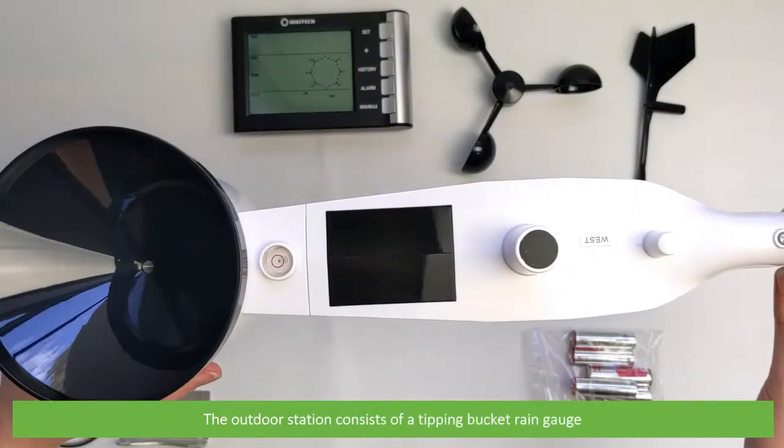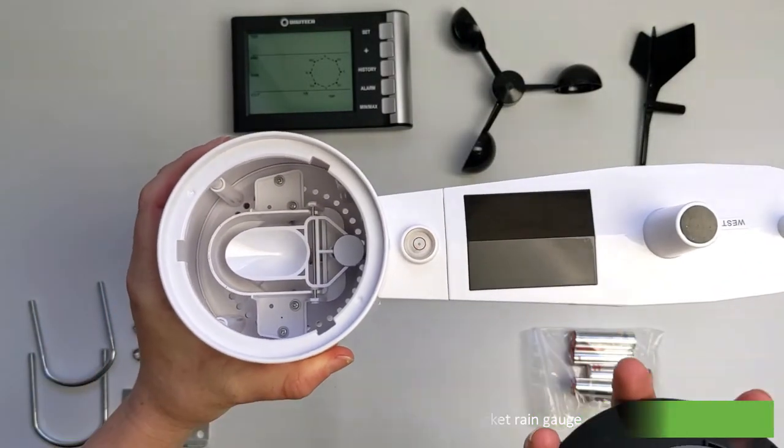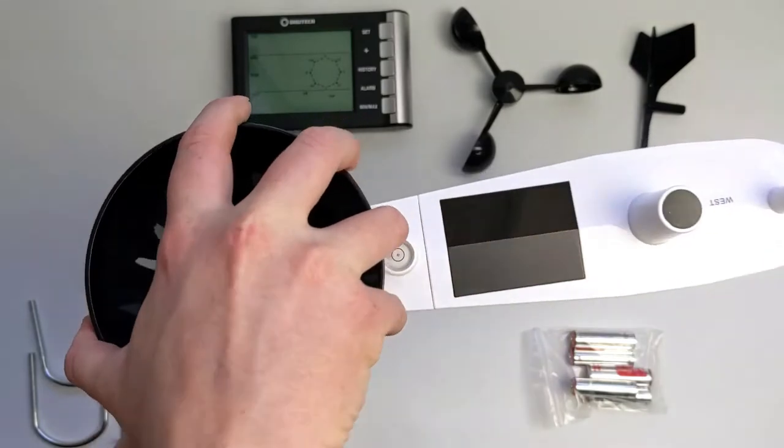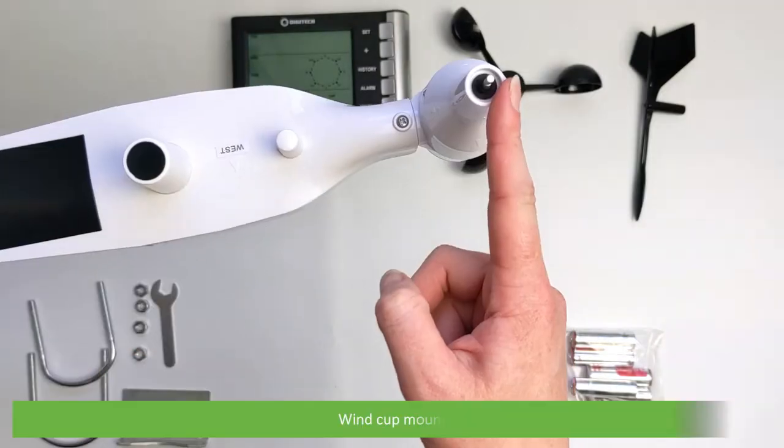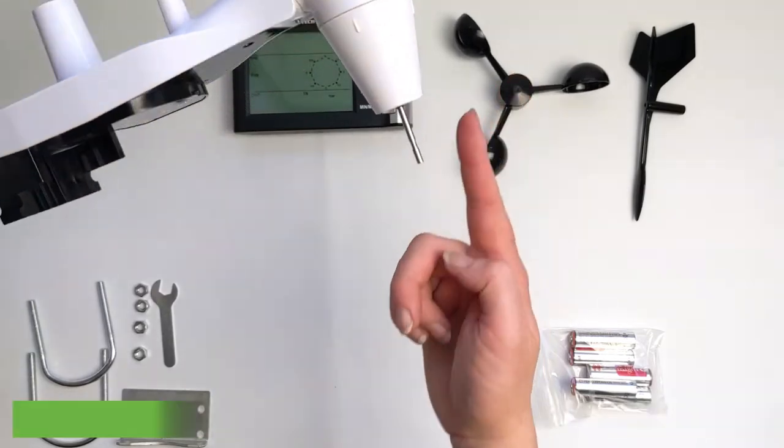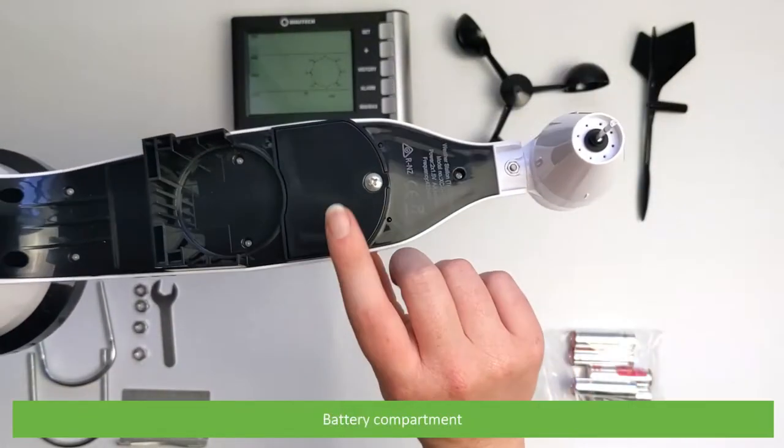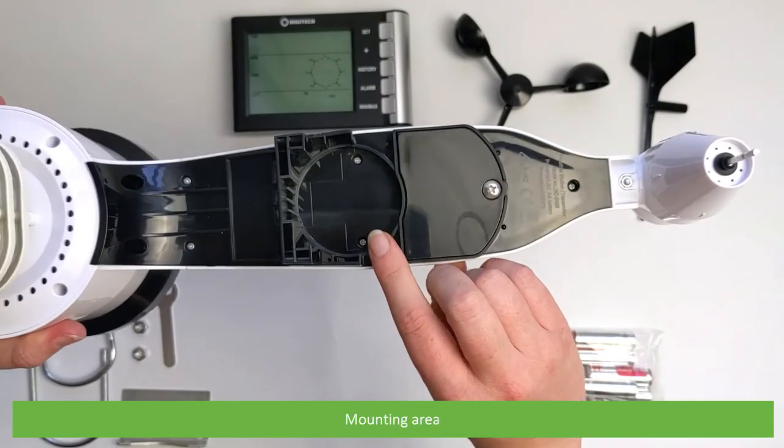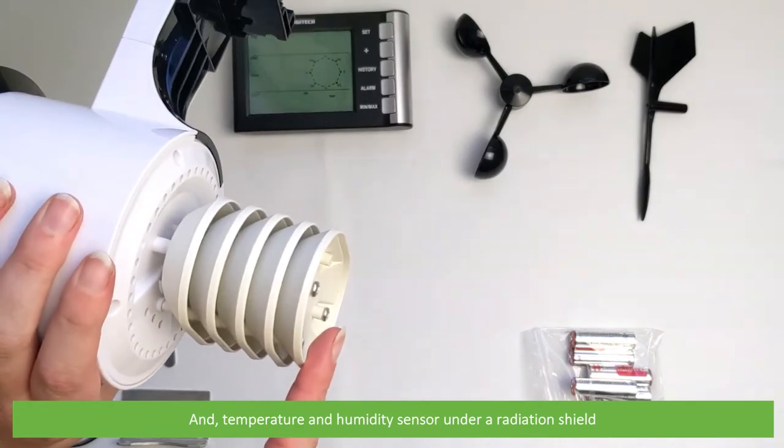The outdoor station consists of a tipping bucket rain gauge, bubble level, antenna, wind cup mount, wind vane mount, battery compartment, mounting area and the temperature and humidity sensor under a radiation shield.